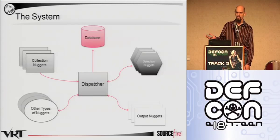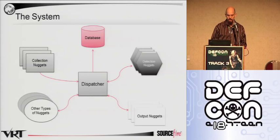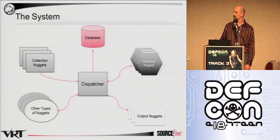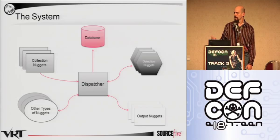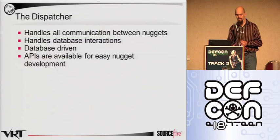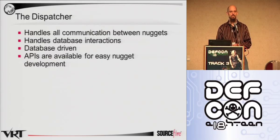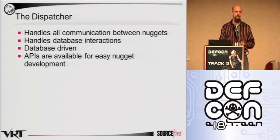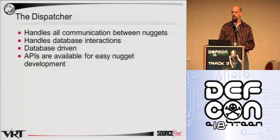The dispatcher is what ties everything together. The primary nuggets developed today are collection nuggets which gather data, the database which stores all the information, detection nuggets which process that data, and output nuggets that do the alerting. The dispatcher is the key piece that the VRT is supplying as the primary component of Razorback — it's really the heart of the system. We call it the defense router. It handles all incoming and output data and provides mechanisms for correlation nuggets to access the database and do advanced analysis.